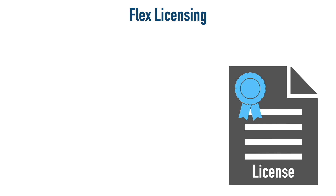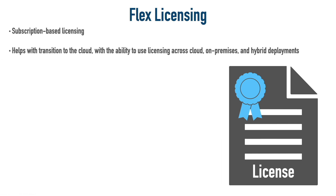Now let's consider the even newer option: flex licensing. Like many software companies today, we subscribe to the licensing — it's not a one-time purchase but a subscription, and we can dynamically adjust it based on our needs. One of the main things that makes flex licensing attractive is that it helps us migrate to the cloud. Smart licensing covers on-premise solutions — Communications Manager, Unity Connection, IM and Presence, and Expressway all running at your site.